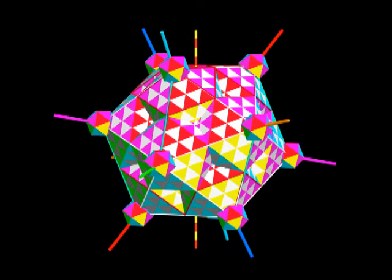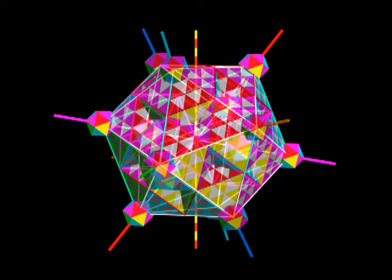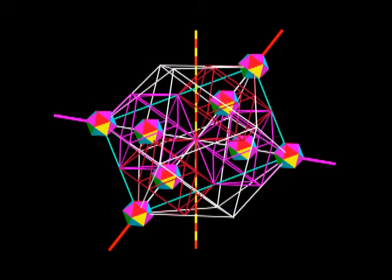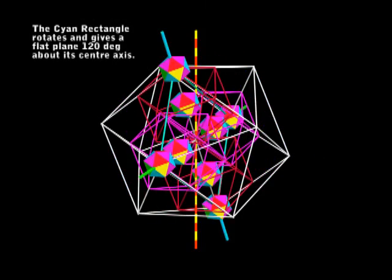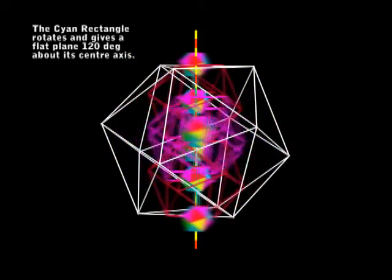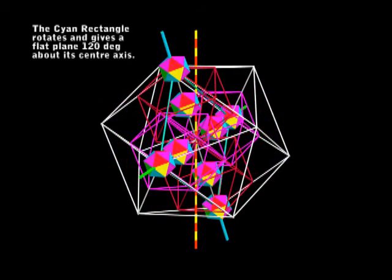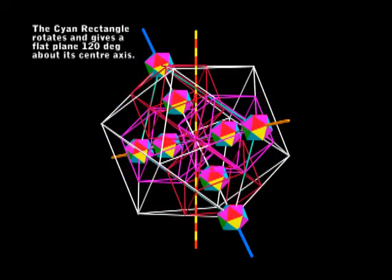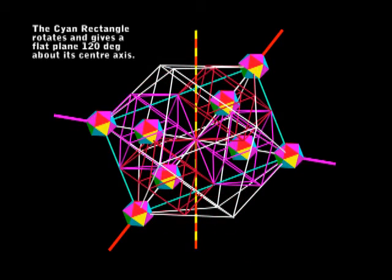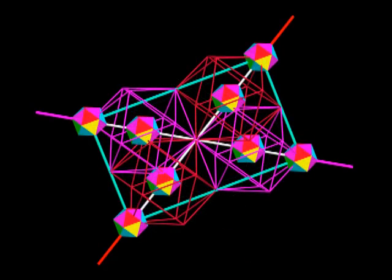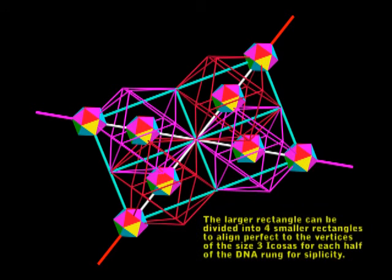So what I'm going to do now is hide the colors of the size 3 icosas again, because I've got something else that's interesting to show you. Notice that the cyan rectangle rotates 120 degrees with the assembly. I think we might have got something important here. I'm going to divide the big rectangle into four smaller rectangles. Now I'll make the diagonals the same color as the vectors.